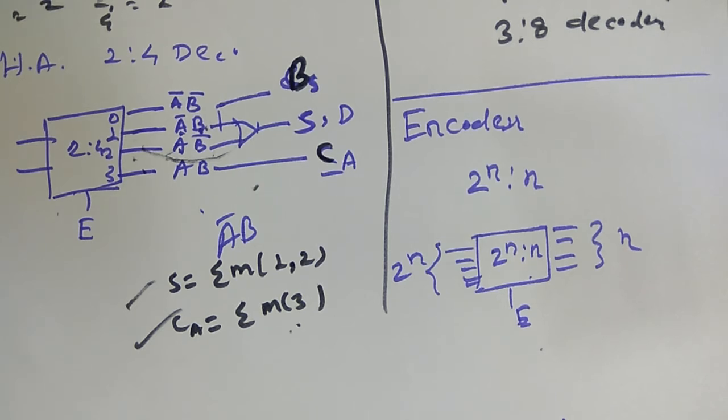We have two types of encoders: the first is a normal encoder and the second is a priority encoder.